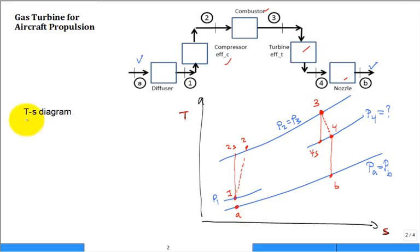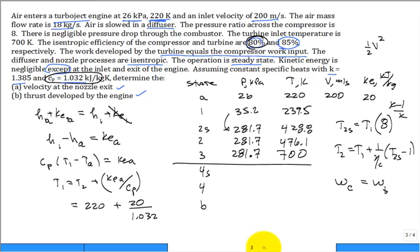Okay, and in this TS diagram, I'm going to come back to it again. We want to solve for the properties. As we were marching through, we were making a table of different states, writing the pressure, the temperature, the speed, and the kinetic energy. The speed and the kinetic energy are only for the inlet state A and the exit state B. The rest of the table, they'll just be zeros because we neglect them.